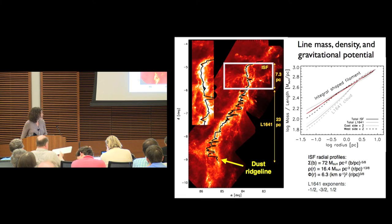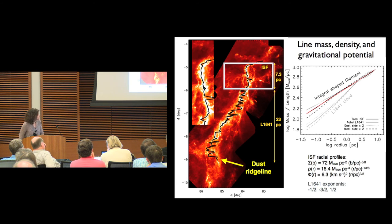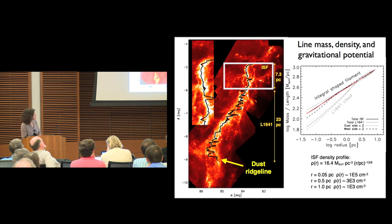Using this mass per unit length profile, we can calculate a density profile, assuming cylindrical geometry, and the gravitational potential for the cloud. This gives the evaluation in terms of number densities, which might be more familiar to people here.